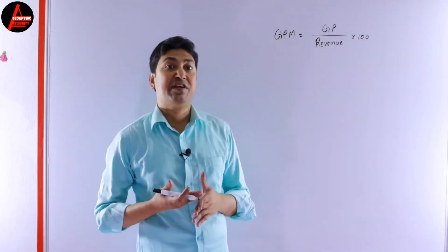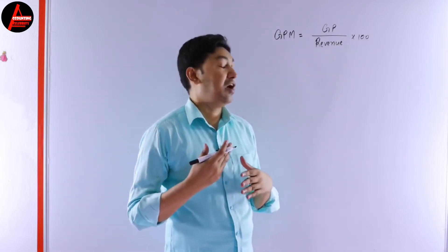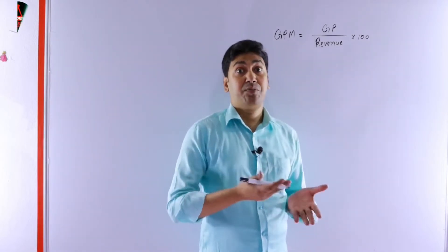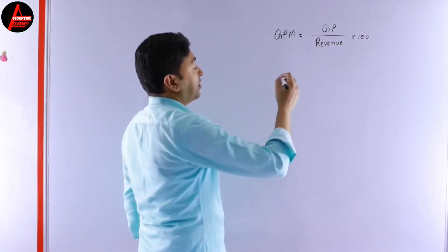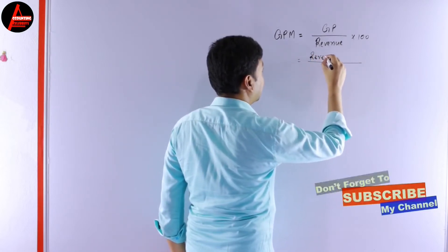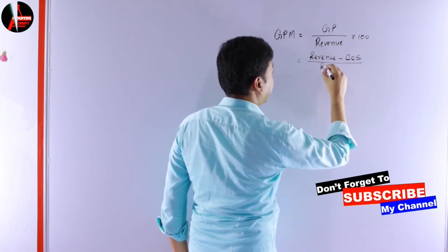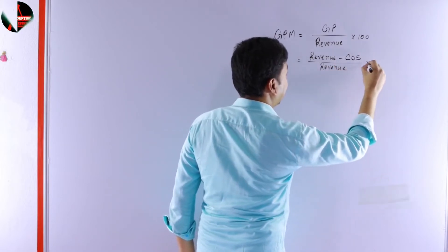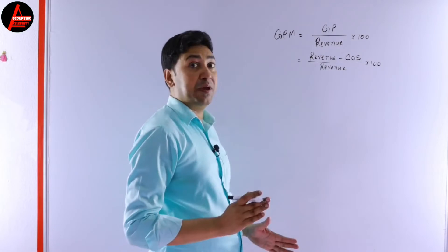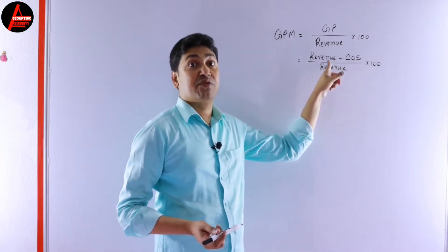In this question we have sales revenue, but there is no gross profit directly given. However, we do have cost of sales. Since gross profit equals sales revenue minus cost of sales, we will write: revenue minus cost of sales, divided by revenue, times 100.